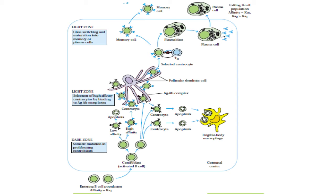For class switching, it may occur in the light zone or it may occur outside the light zone. Three important events occur in the B cell once it leaves the dark zone and comes into the light zone: class switching, affinity maturation, and differentiation into memory cells and plasma cells.